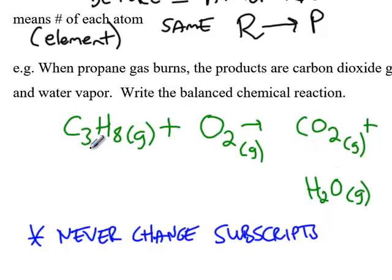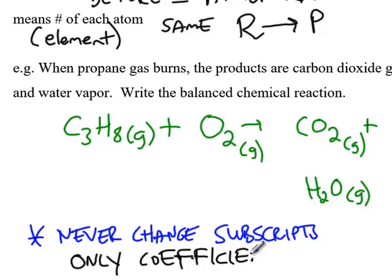For example, I can't make carbon dioxide into C3O2 to balance out my three carbon atoms on both sides. The thing I can change is the number out in front, which is called the coefficient. So I'm going to put a little line in front of each chemical to change the number that gets multiplied by the chemical formula in order to make everything balance on both sides.